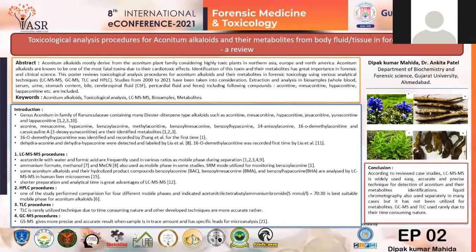GC-MS gives more precise and accurate results when the sample is in a trace amount, and it has specific leads for microanalysis. According to the review of case studies, we concluded that LC-MS/MS is the widely used, easy, accurate, and precise technique for detection of aconitum alkaloids and identification of their metabolites. Liquid chromatography is also used separately in many cases, but it has not been utilized for metabolites. GC-MS and TLC are less used due to their time-consuming nature. Thank you.